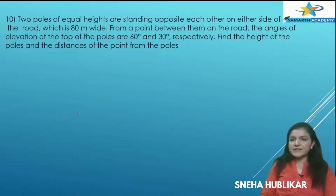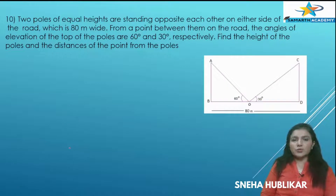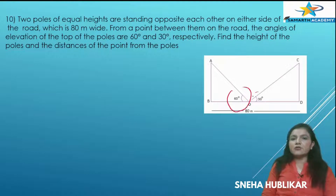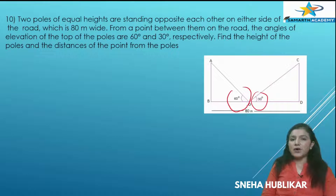So what does question 10 say? Two poles of equal height are standing opposite to each other on a road which is 80 meters wide, and they are making an angle of inclination 60 degrees and 30 degrees from a point on the road. He is asking the lengths of the poles — AB and CD are equal — and also the distance of the point from the poles.